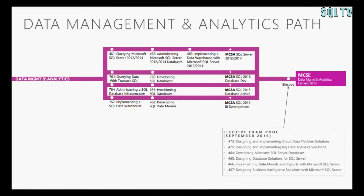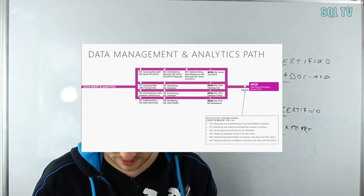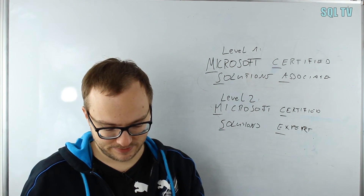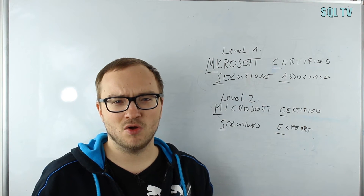Looking back at the sheet at the new possibilities: the new MCSE is called Data Management and Analytics. You get it by passing just one of the exams shown in the box below — such as 473, 467, or others. For instance, I did exam 464, Developing Microsoft SQL Server Databases, and I get the MCSE. That's it.